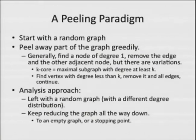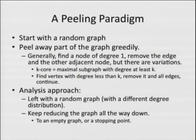One way the analysis works out is that as you peel, if you start with a random graph, you can show inductively that you still have a random graph at each step. The degree distribution changes as you go — it depends on what you've already deleted and how many edges are left — but the randomness structure is preserved.